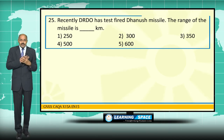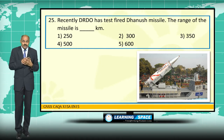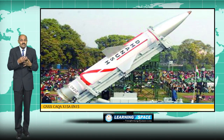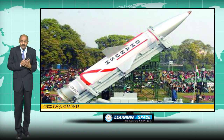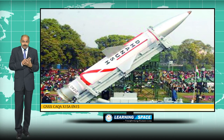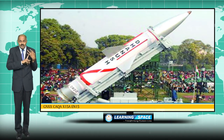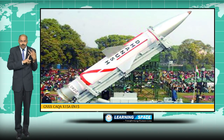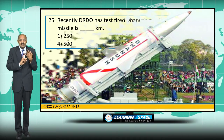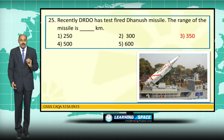DRDO (Defence Research and Development Organisation) recently tested the Dhanush missile. Dhanush is a surface-to-surface missile tested from a ship. It can carry a nuclear warhead of 500 kg, and its range is 350 kilometers.